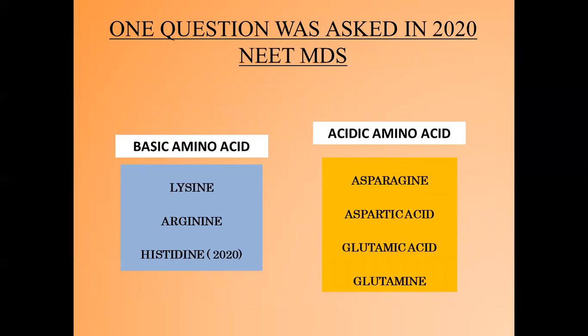Now about the amino acids. One question was asked in NEET MDS 2020 question paper. The basic amino acids are lysine, arginine, and histidine. The acidic amino acids are asparagine, aspartic acid, glutamic acid, and glutamine.